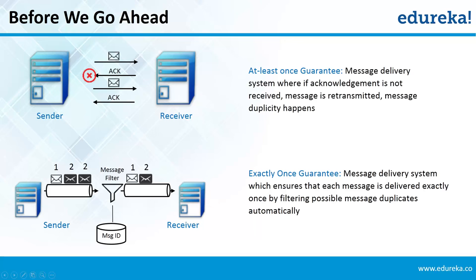On the other hand, exactly-once means a message is delivered exactly one time to the receiver — there won't be any duplicate messages. This is done using a message filter. Even though a sender sends a duplicate message to the receiver, it will be filtered out by the message filter using the message ID. As you can deduce, the exactly-once approach is better than the at-least-once approach.